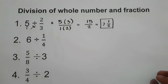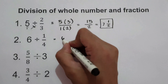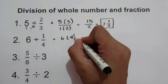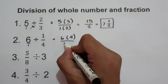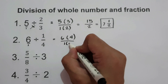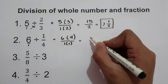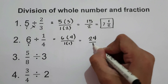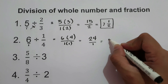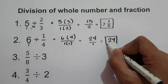What about number 2? We have 6 divided by 1/4. So 6 multiplied by 4, and the denominator of 6 is 1, times 1. That gives us 6 times 4, which is 24, over 1. 24 divided by 1 is simply 24. So 24 is our final answer.